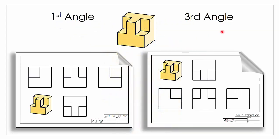Here we have an object represented in first angle and here in third angle. The object is going to be represented in exactly the same way — the same views are going to be given in both cases — but what's going to change is the orientation of those views relative to our front elevation. If we imagine looking into the front of the object, here's our front elevation in first angle and here it is in third angle.